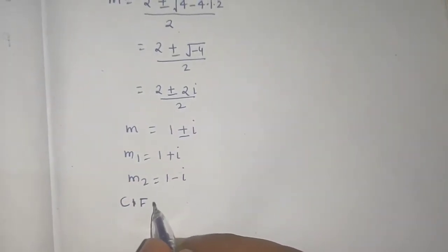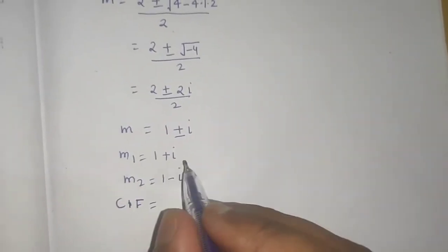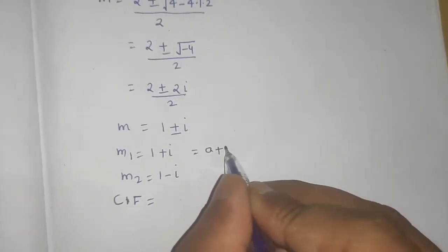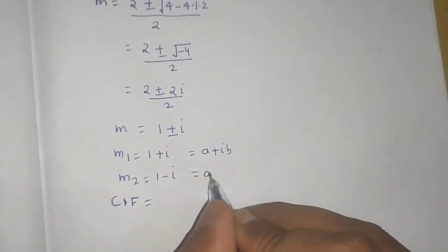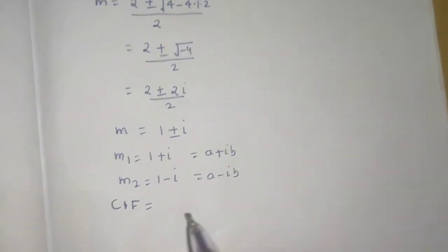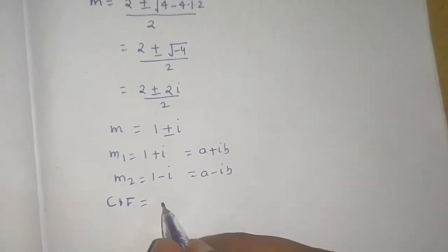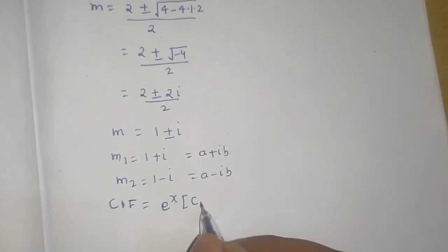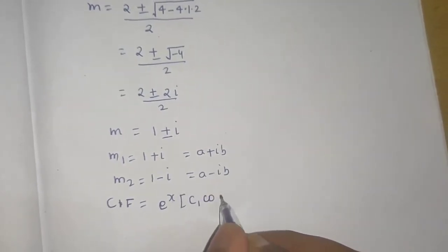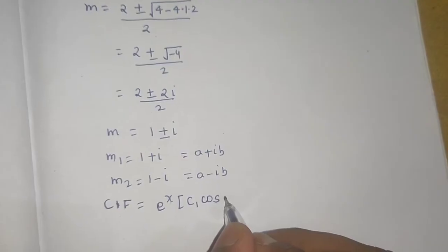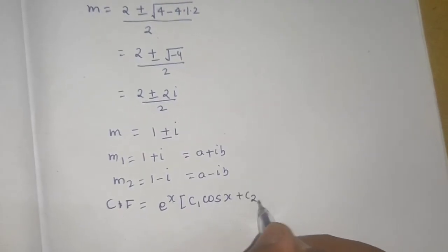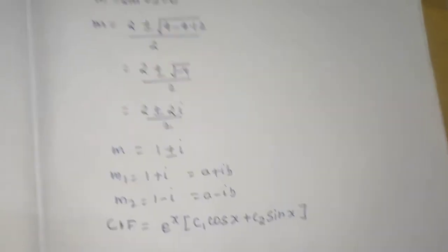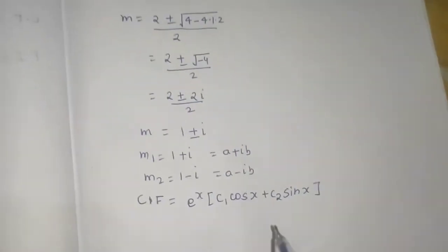These complex roots are of the form a ± ib where a = 1, b = 1. The complementary function contribution is e^(ax)[c₁cos(bx) + c₂sin(bx)] = e^x[c₁cos(x) + c₂sin(x)].